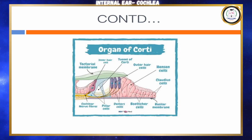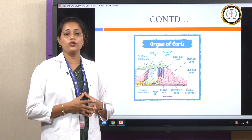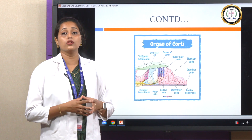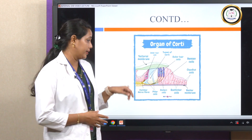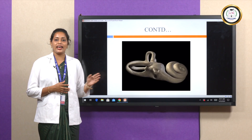The organ of Corti also contains an important structure called the tunnel of Corti, which is also known as the rod of Corti.